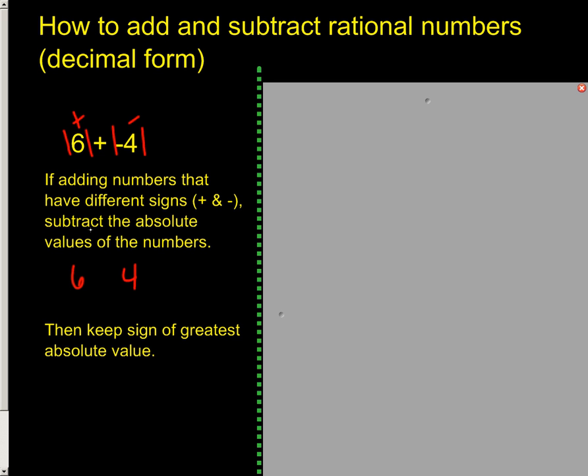So you found the absolute values and now we subtract them with 6 minus 4, which is 2. The last thing is to keep the sign of the greatest absolute value. This had the greatest absolute value, so it was positive. That means our answer is positive.